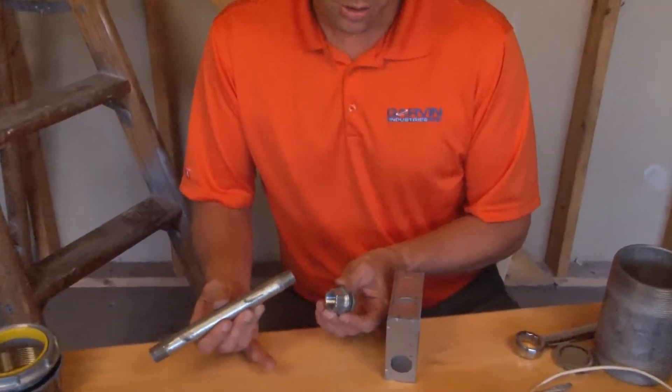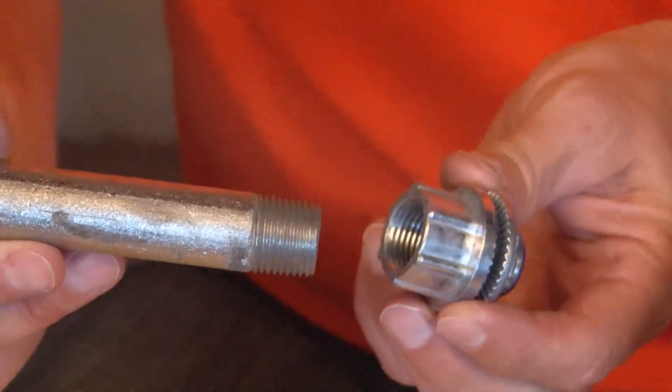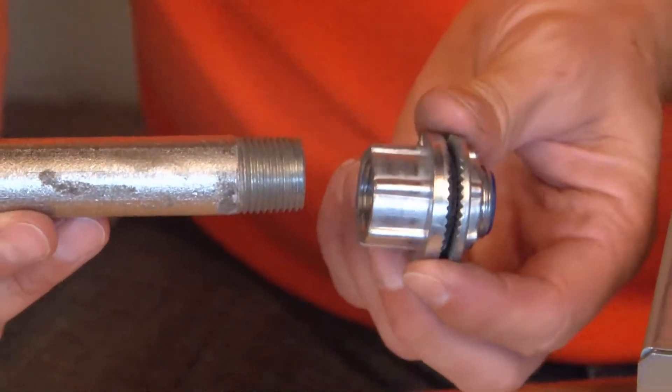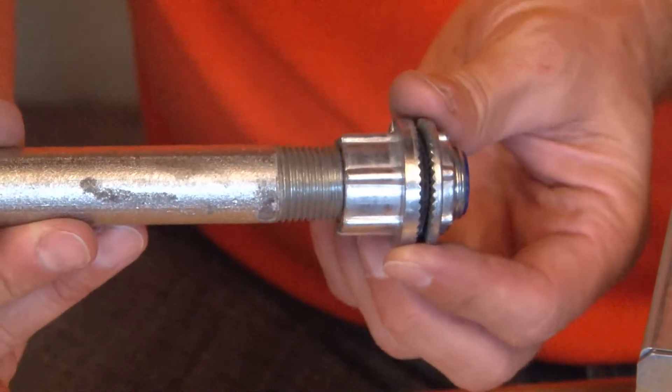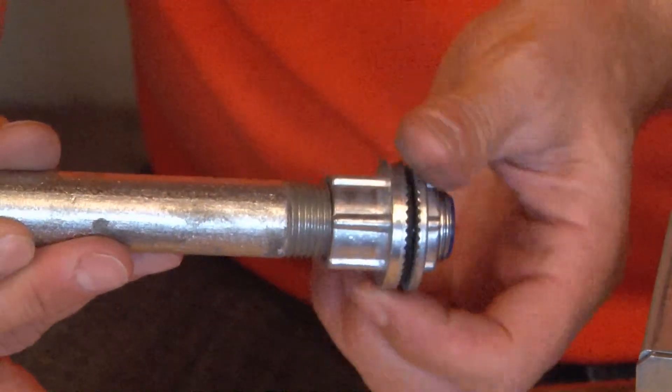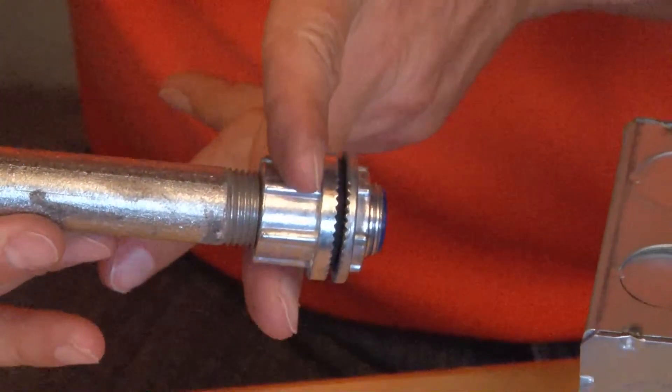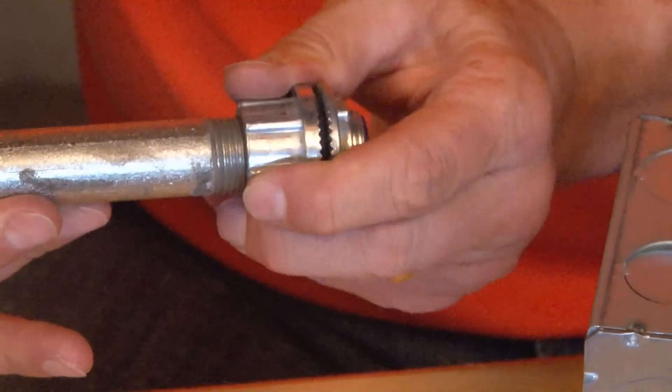There is a threaded aperture on the watertight fitting that matches the threads on the rigid conduit. Simply align the front of the fitting with the threads on the rigid conduit and tighten until it's securely on the conduit. Using a pair of pliers or channel locks, you can grab the flats and tighten it very secure.